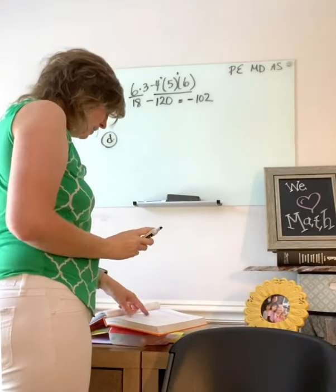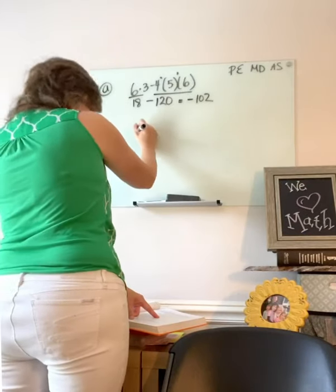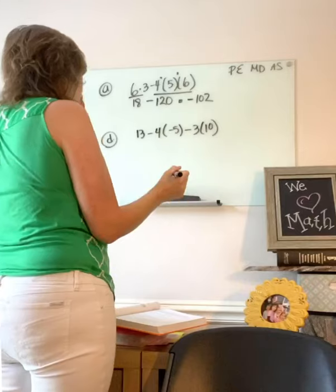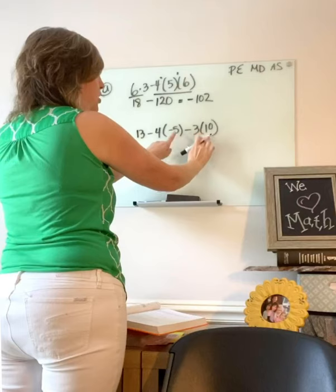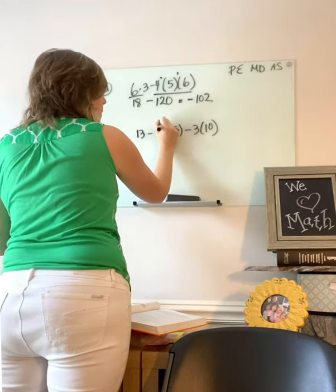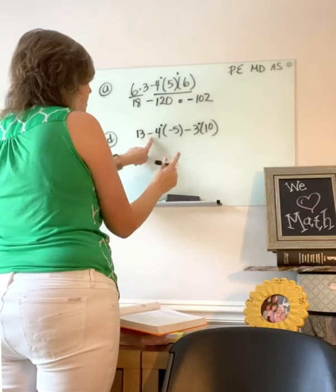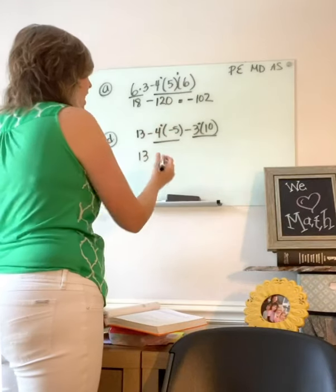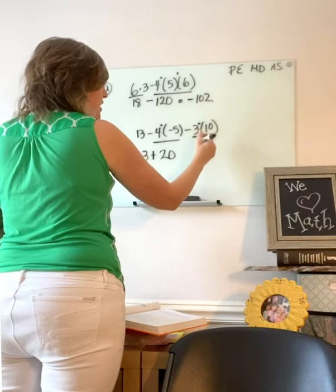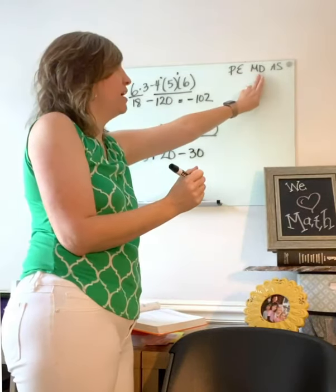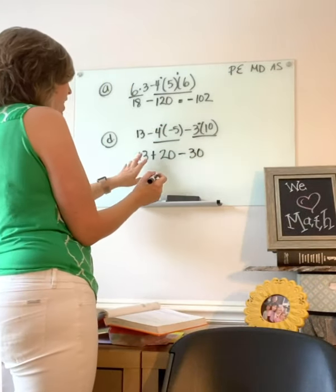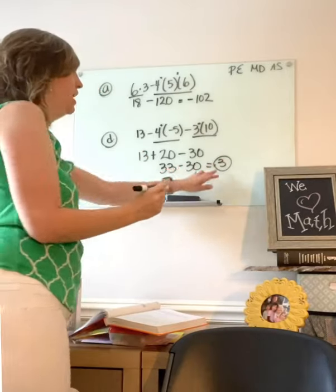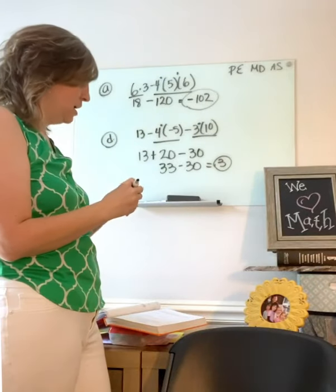The last practice problem we'll do is letter D: 13 minus 4 parentheses negative 5, minus 3 parentheses 10. The parentheses just mean multiply, so I multiply first. Negative 4 times negative 5 is plus 20; negative 3 times 10 is minus 30. Now I add and subtract from left to right: 13 plus 20 is 33, minus 30 — final answer, 3. I love to circle answers so I know where they are. That was letter A and letter D on lesson 11.